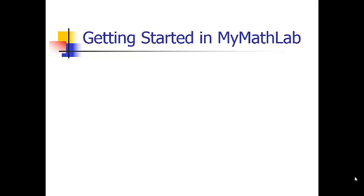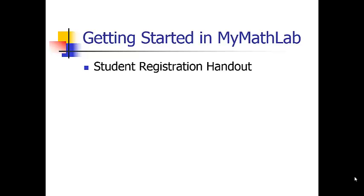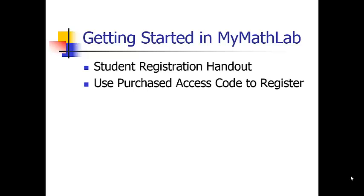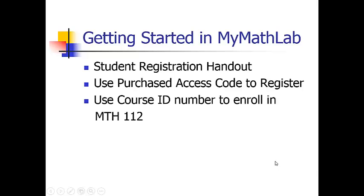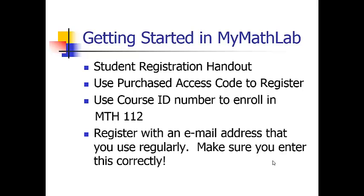The second module instructs you on how to begin your coursework. You will find a student registration handout, which gives you step-by-step instructions on how to register. When you register, you will need to use your access code that you've purchased, your course ID number that you found on your syllabus, and you will also need to register an email address.